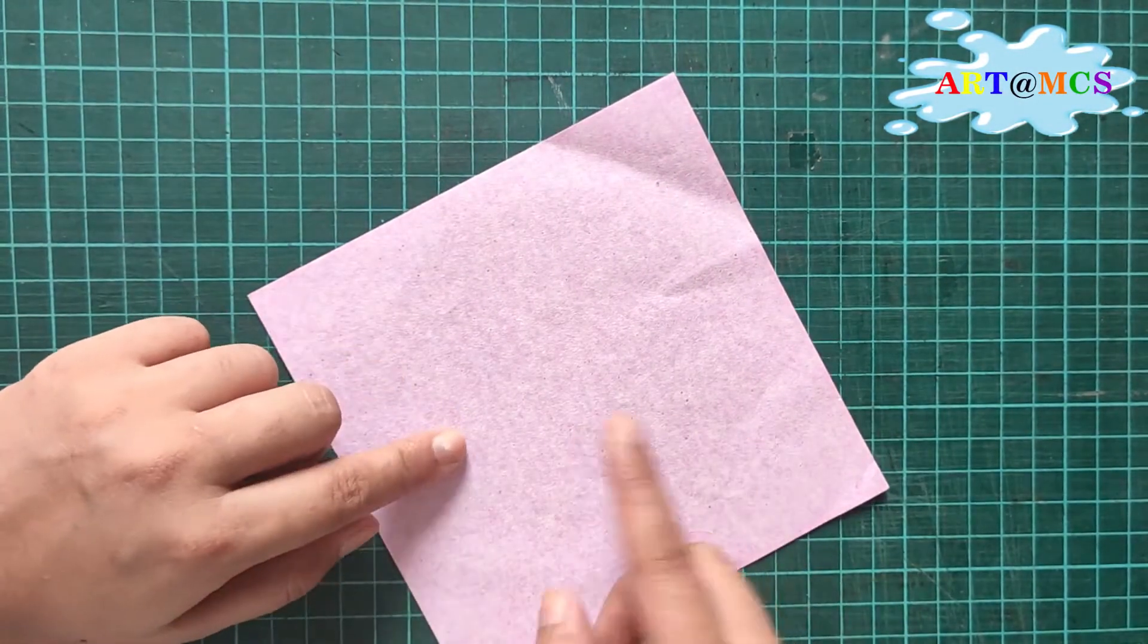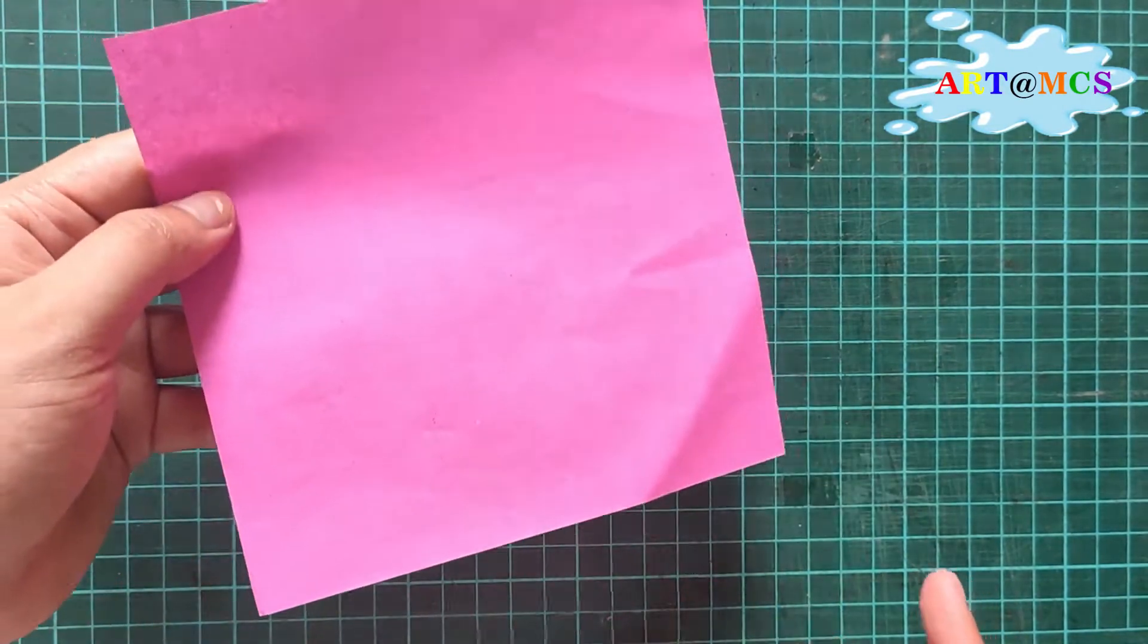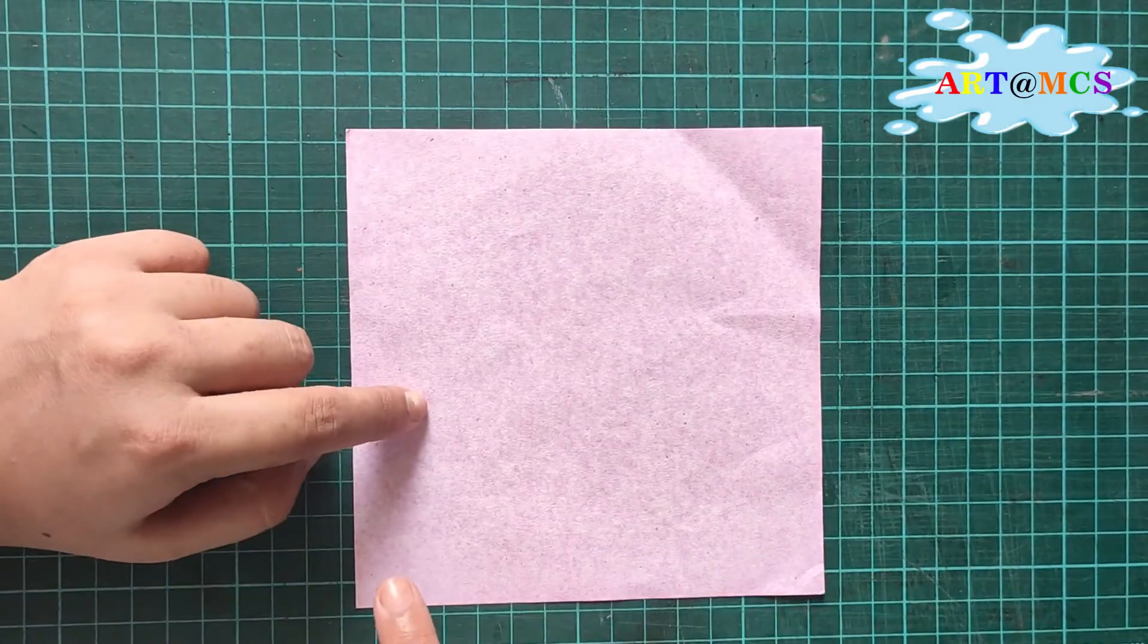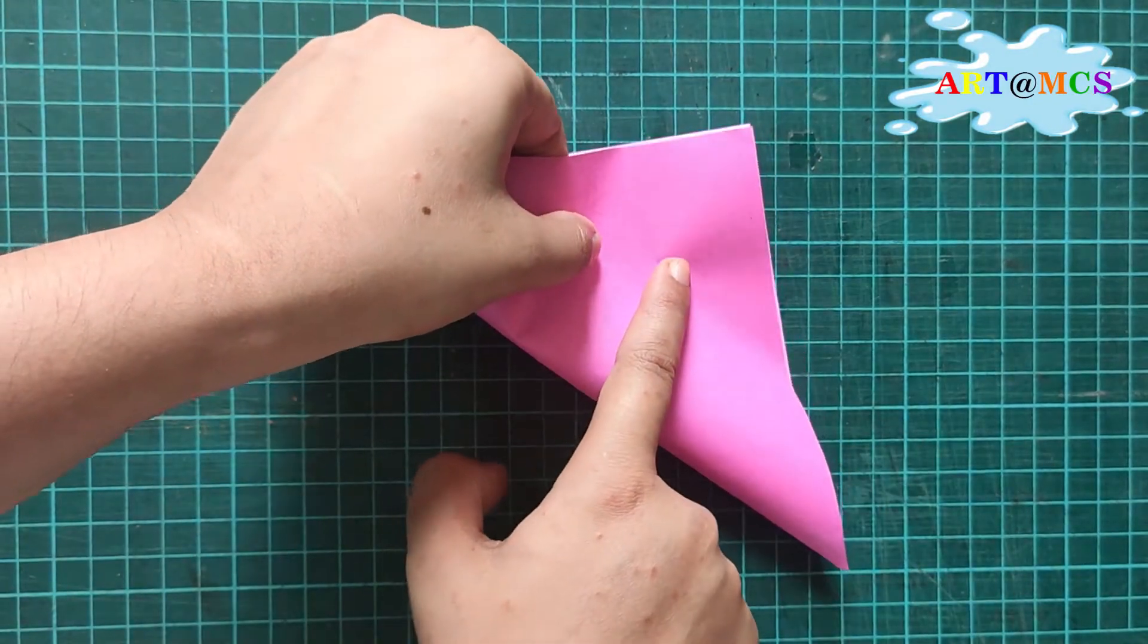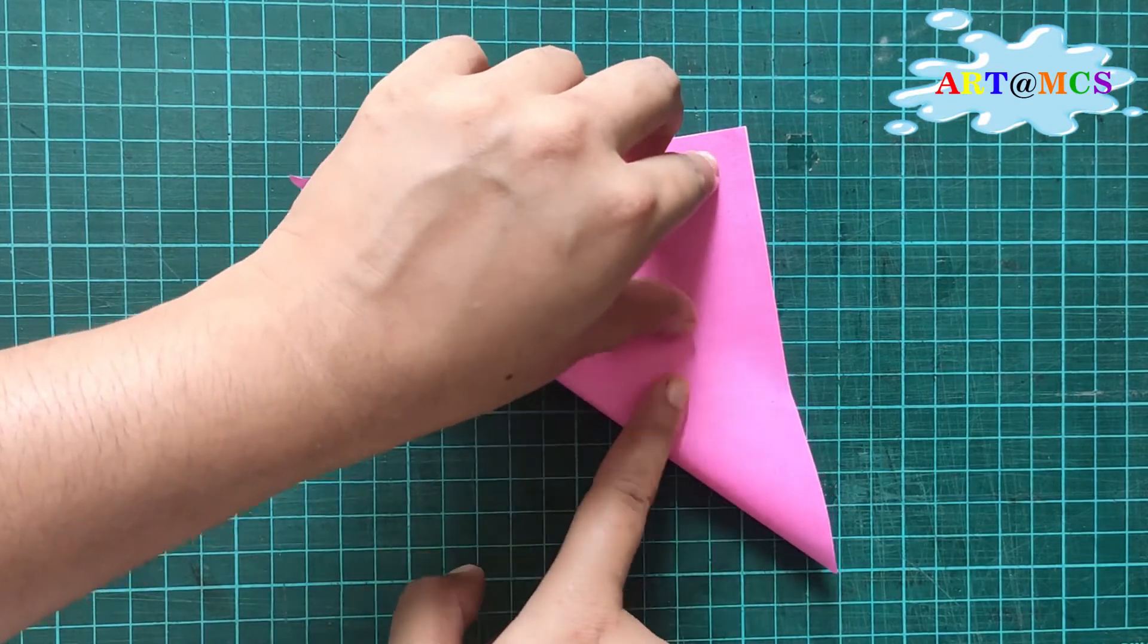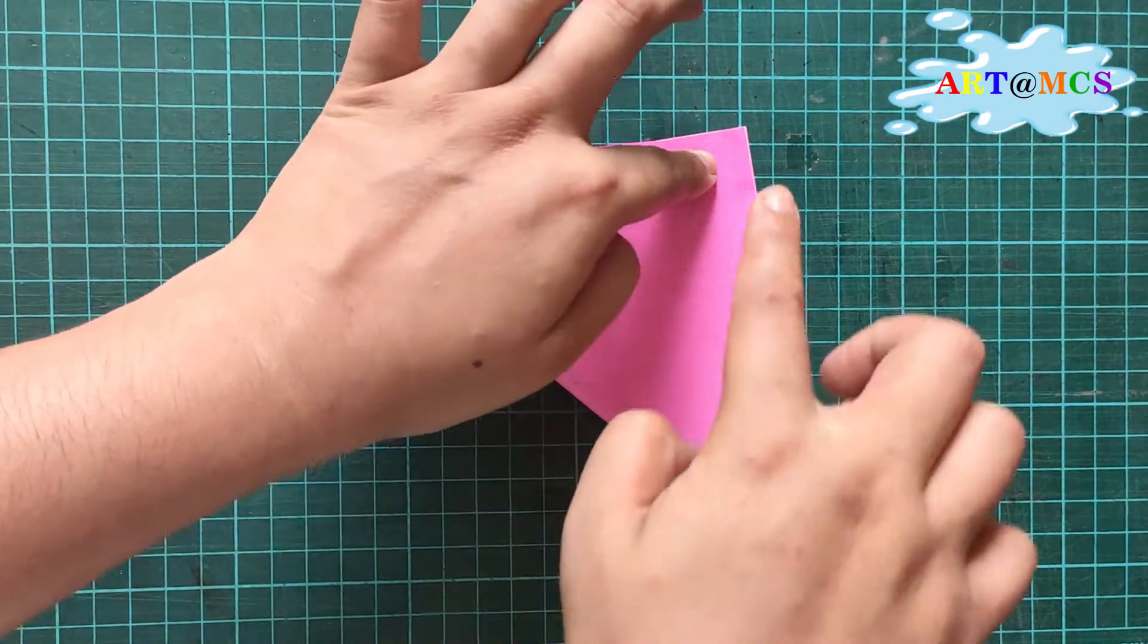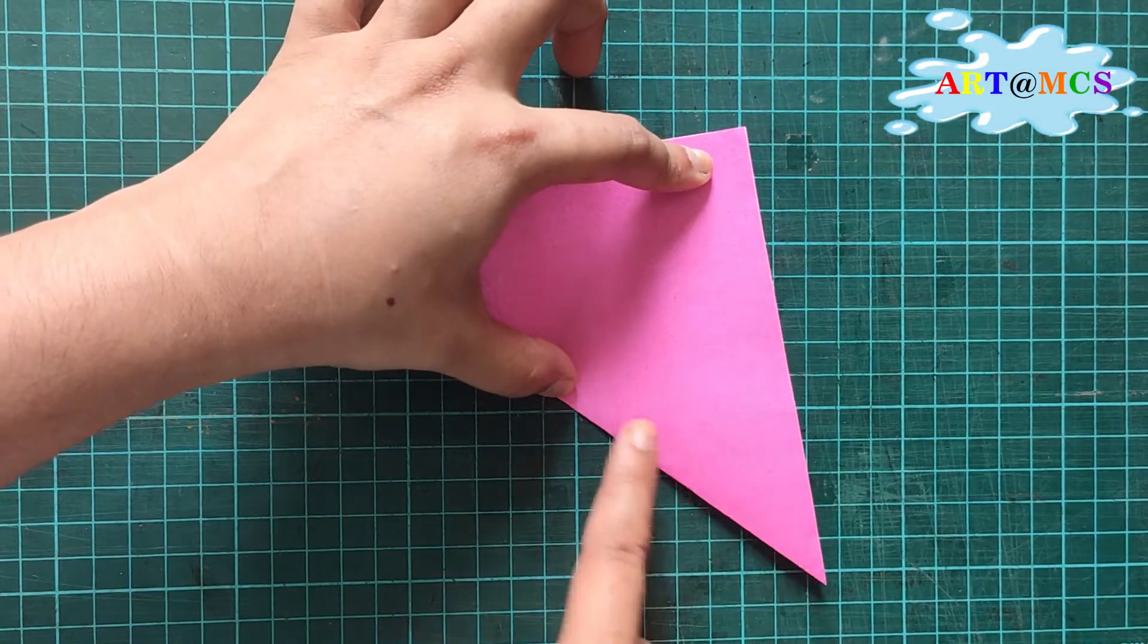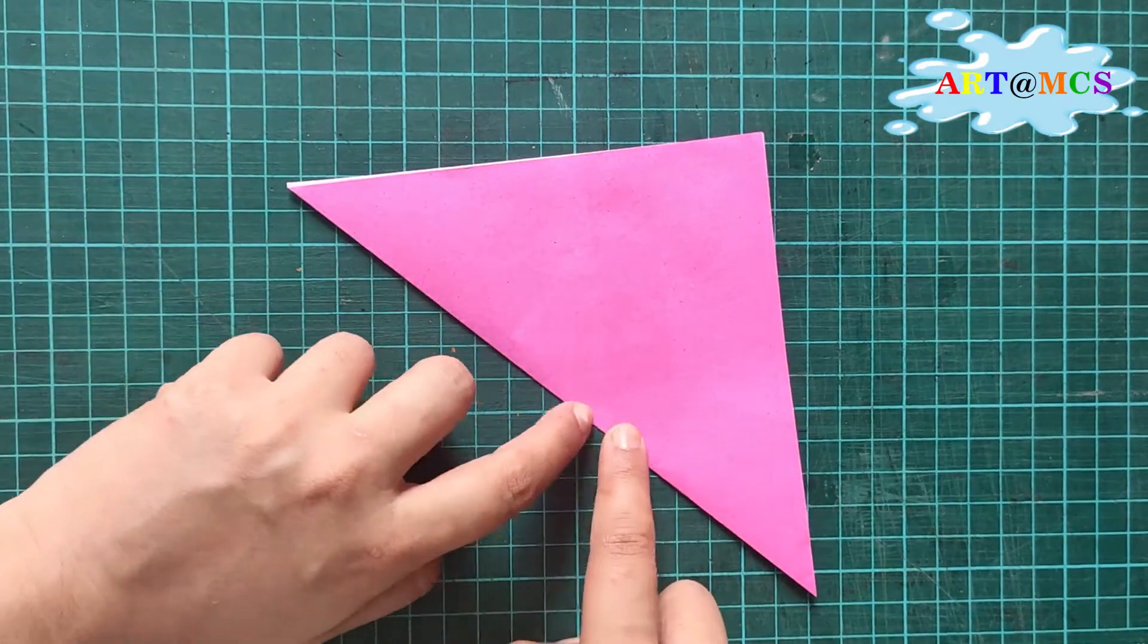From here till here, fold and match the corners. While holding this, press it with your fingers and make a nice crease. You can use your nails.